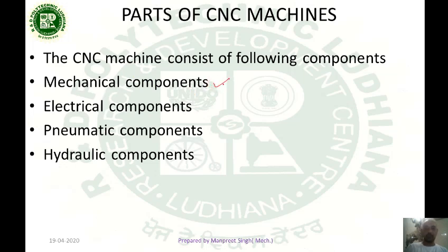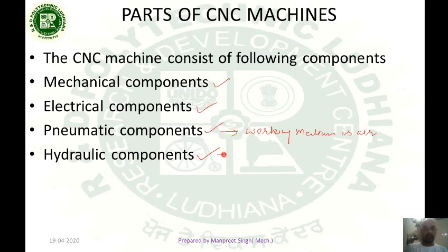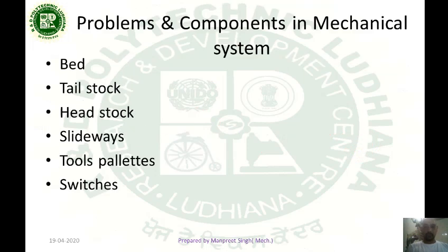The main parts are mechanical components, electrical components, pneumatic components, and hydraulic components. In pneumatic components the working medium is air, and in hydraulic components the working medium is oil. This is the main basic difference between pneumatic and hydraulic components.